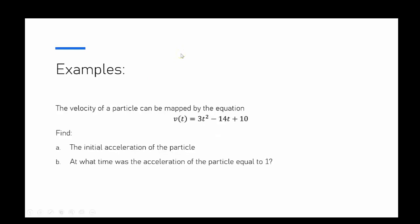The example we're going to focus on is we've got a velocity equation of a particle mapped by the equation v(t) = 3t² - 14t + 10. We're going to find the initial acceleration of the particle and at what time the acceleration of that particle was equal to 1.